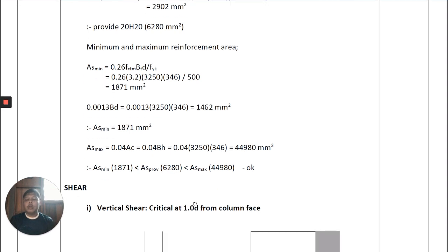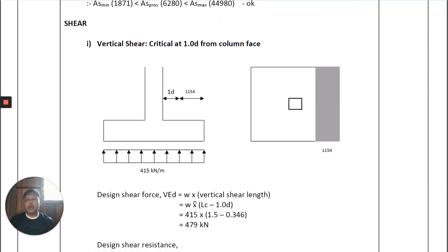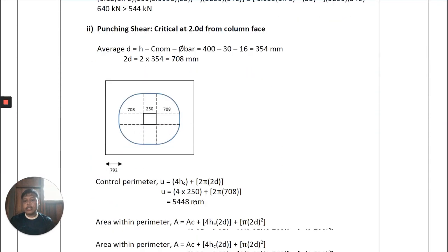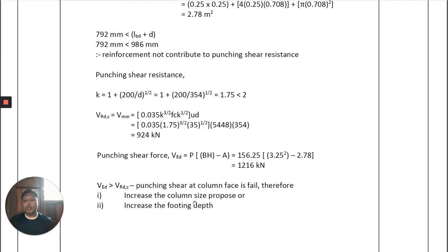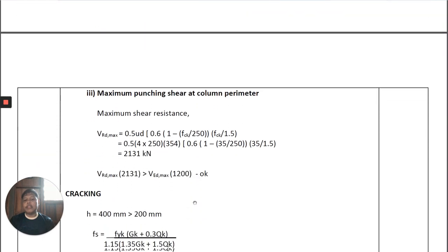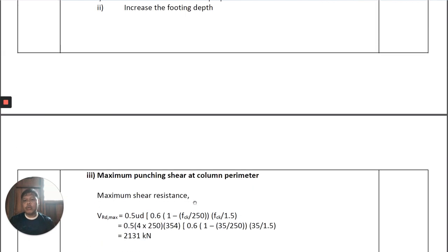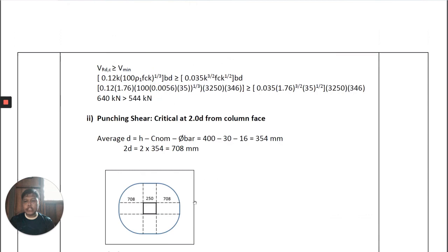The shear checks we need to perform are: first, vertical shear; second, punching shear; and third, maximum punching shear at the column face. All three conditions must pass. If any check fails, we must redesign the section or make improvements so that the design passes.